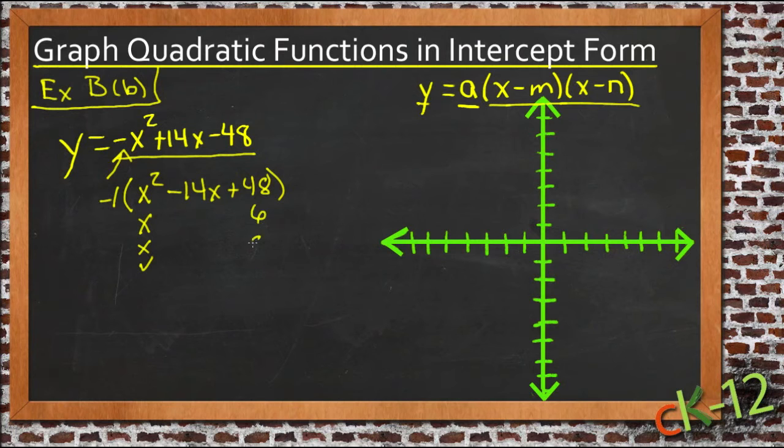So 48 is 6 and 8, and if they're going to add up to be negative 14 though, we need a negative and a negative, because the only way to get to a negative number by addition is to have negative numbers. But negative 8 times negative 6 is still going to be positive 48, so that still works.